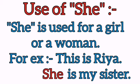For example, this is Ria. Ria ek ladki ka naam hai. So, Dash is my sister. Toh hum kya use karenge? He ka use boys aur gents ke liye hota hai, aur She ka use girls aur women ke liye hota hai. Toh yahaan par Ria kya hai? Girl hai. Toh hum yahaan She ka use karenge. She is my sister. Vah meri behen hai.